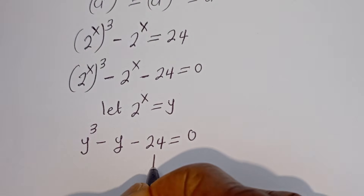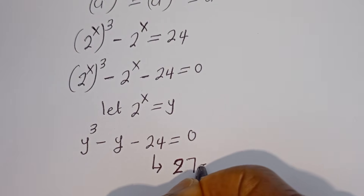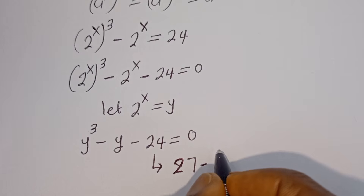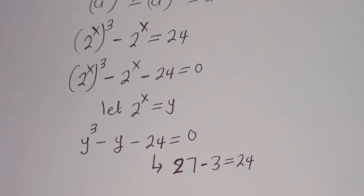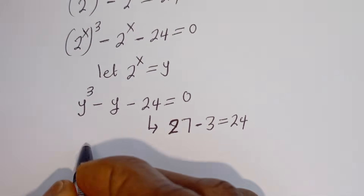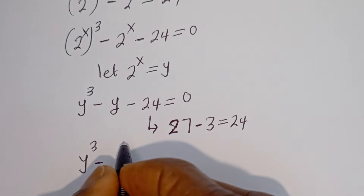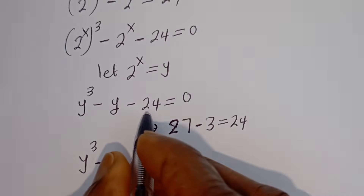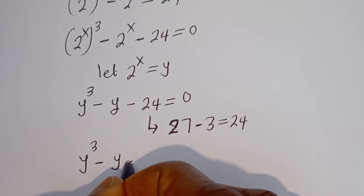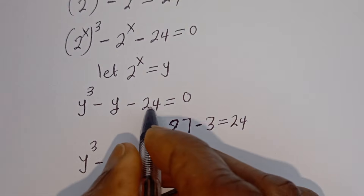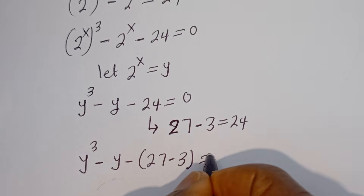Now, this 24 can be written as 27 minus 3. So let's replace: we have y to the power of 3 minus y, then minus bracket 27 minus 3, is equal to 0.